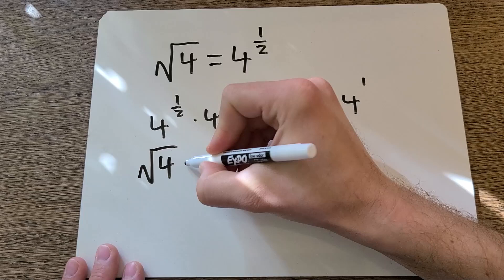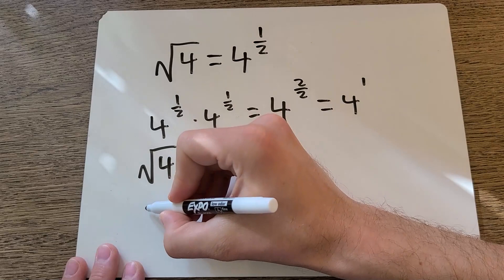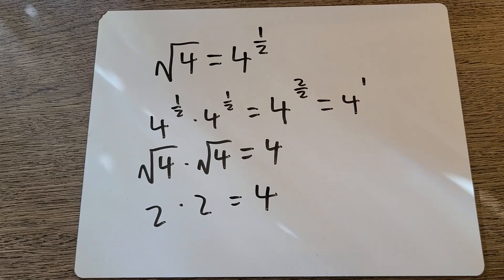And we know that this is the same as 4. Square root of 4 times square root of 4 is going to equal 4. Just like 2, which is the square root of 4, times 2 equals 4.